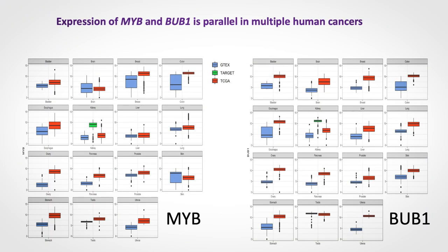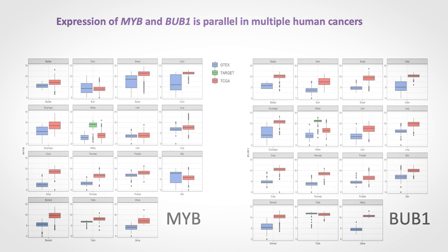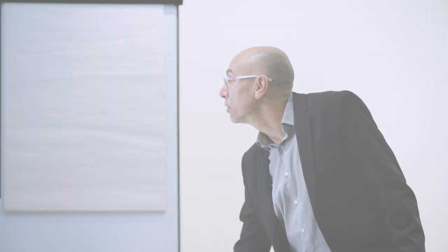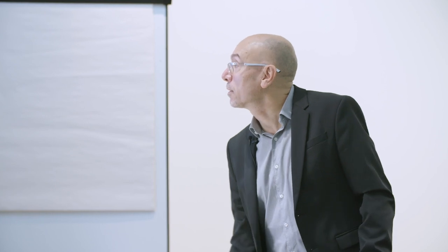We assessed the expression of MIB and BAB1 in several tumors and found that MIB expression and BAB1 expression were parallel in many tumors including ACC, suggesting that BAB1 and MIB expression is linked.